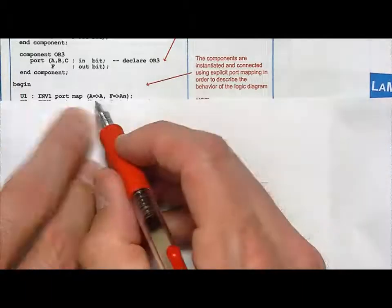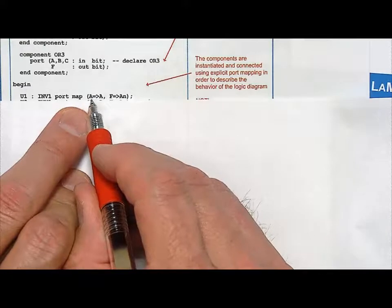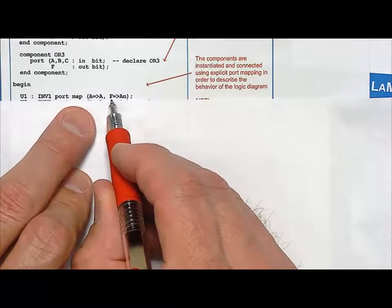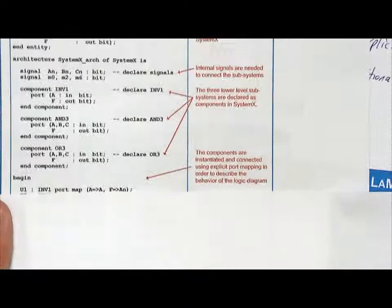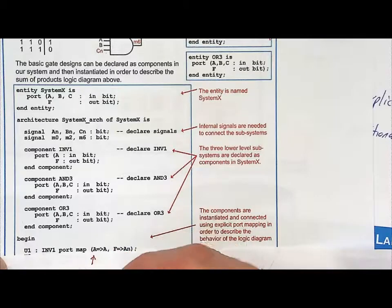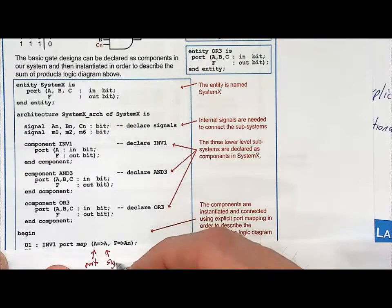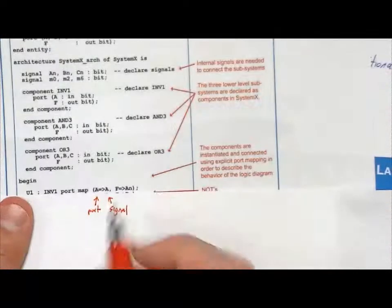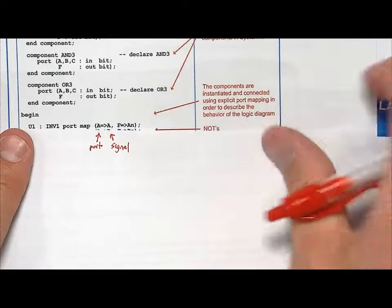So then I say I'm going to use explicit port mapping. Notice that I listed the port name of the inverter, and then I listed the signal name in my entity, or in my top level. This is the port name. F is the port name of the inverter. AN is the signal name of my top level. So let's see if I can get that on the screen. We're really interested in this right here. So notice that this right here was the port of the lower level. And this right here was the signal in the higher level. So that's how you do the explicit port mapping. Now explicit port mapping, you don't have to have these in any particular order because it's so explicit. But it's the safest way to do it, although it does take a little bit of extra syntax.